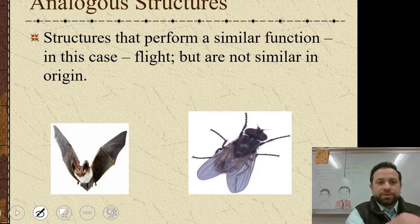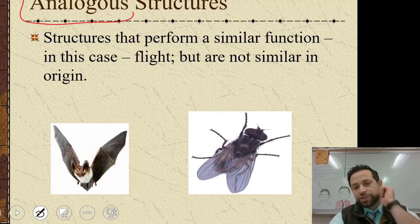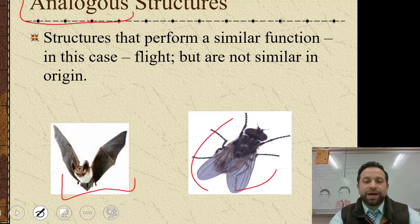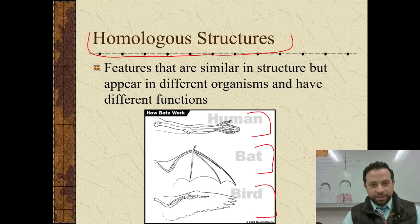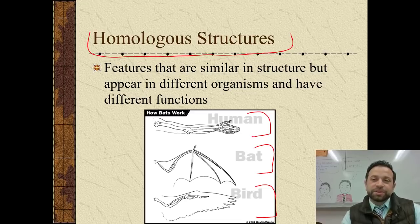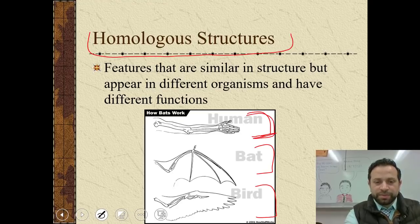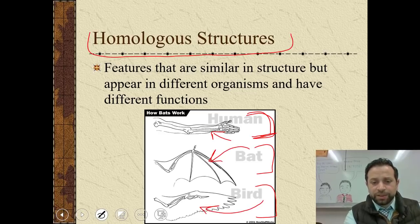Analogous structures perform a similar function but don't share a similar origin — for example, a fly and a bat both have the ability to fly but they're not similar in their origin. Finally, homologous structures are similar in structure but appear different and have different functions. For example, the human arm and the bones of a bat wing or bird wing all come from a similar origin but have different functions.